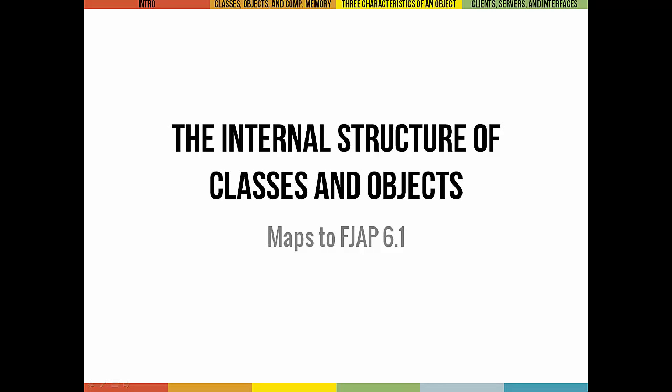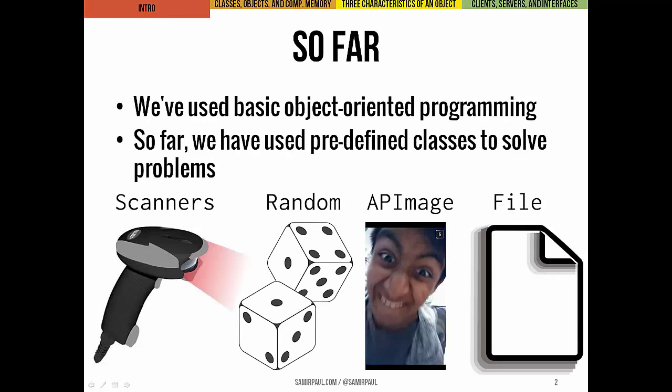From the very start of this course, we've been using objects and object-oriented terminology. We've been using predefined classes like Scanner, or Random, or APImage, or File. We've been using these classes to solve problems, and we've talked about declaring variables of different classes, assigning objects to those variables, and then sending them messages or calling methods.